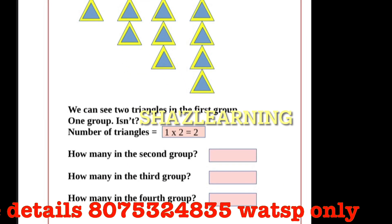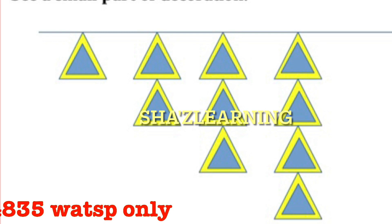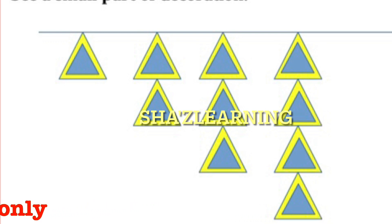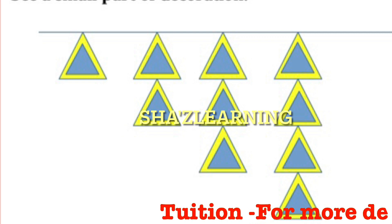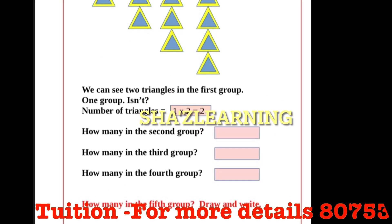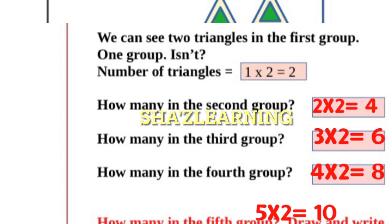In the second group, look here — 2 groups, that is four triangles. That is 2 into 2. Next, third group: 3 into 2. Fourth group: 4 into 2. Fifth group: 5 into 2.